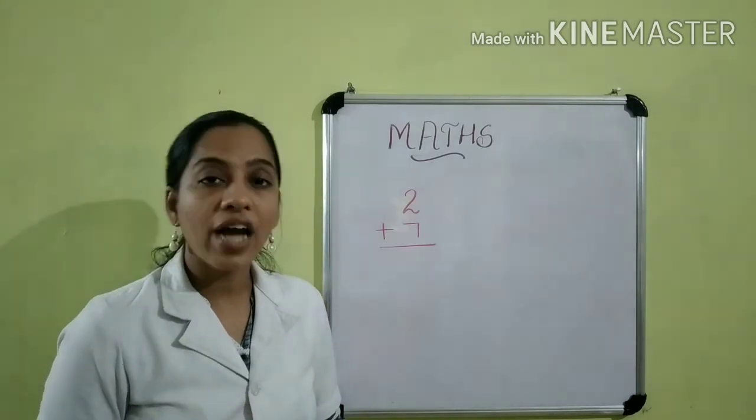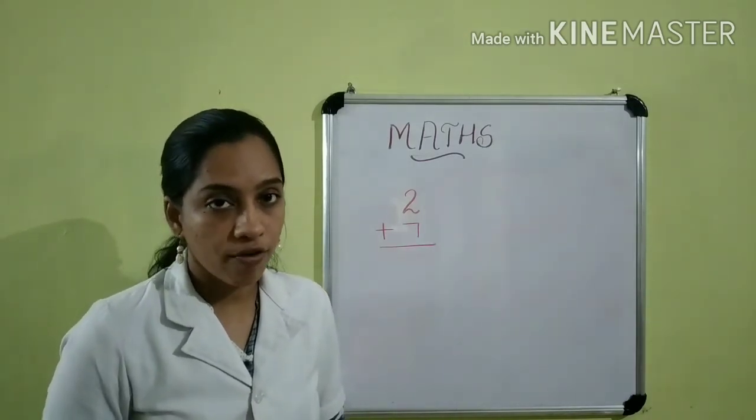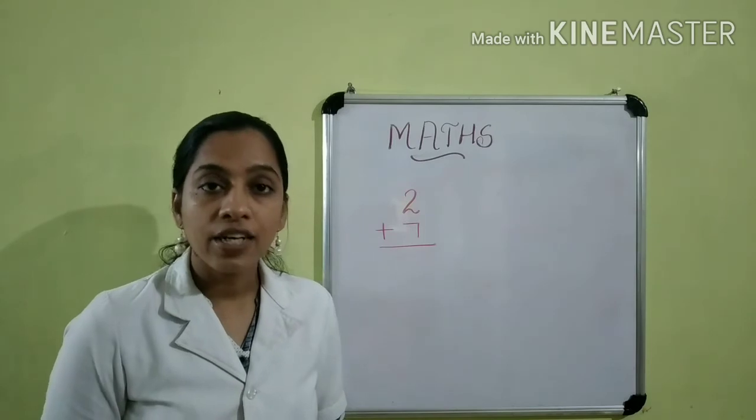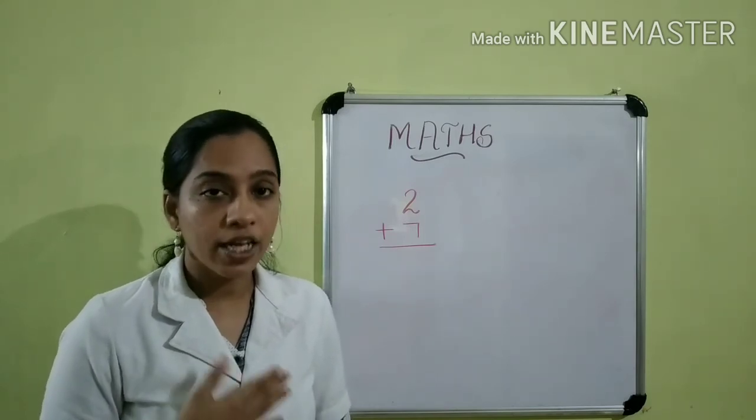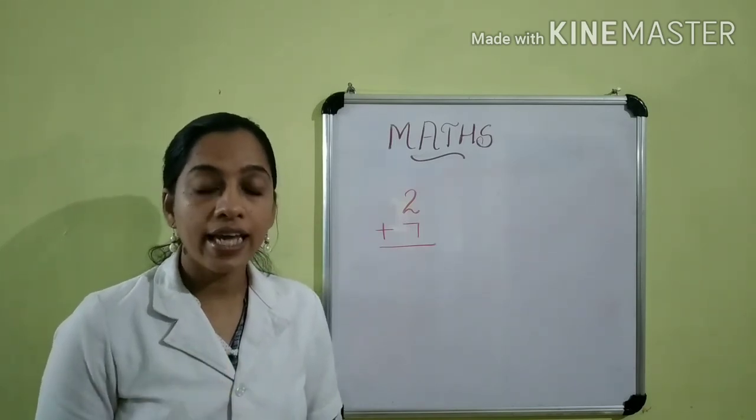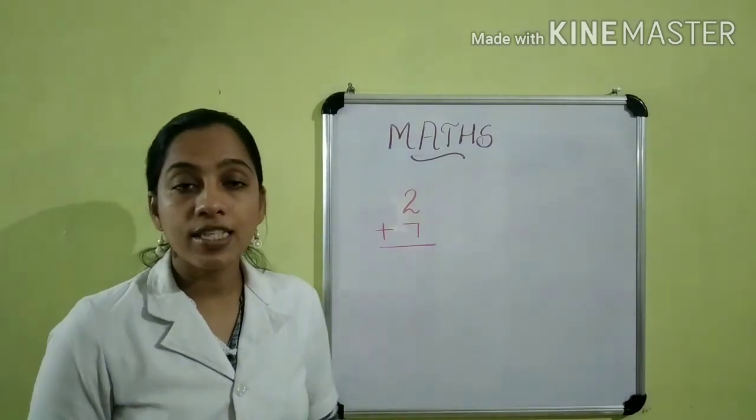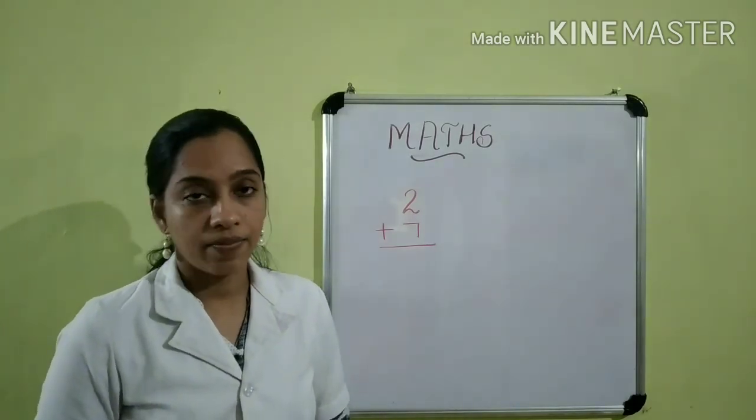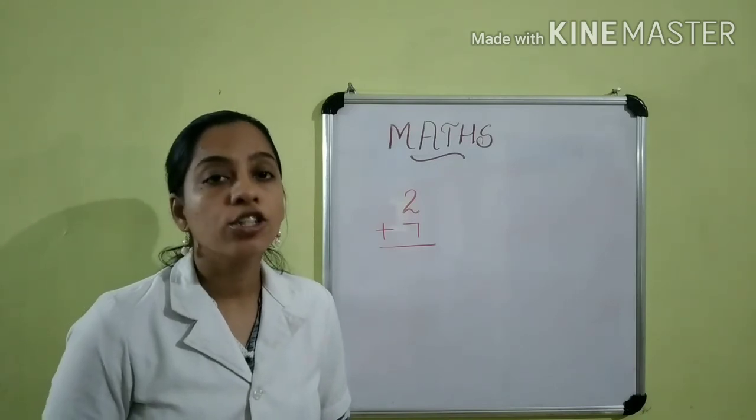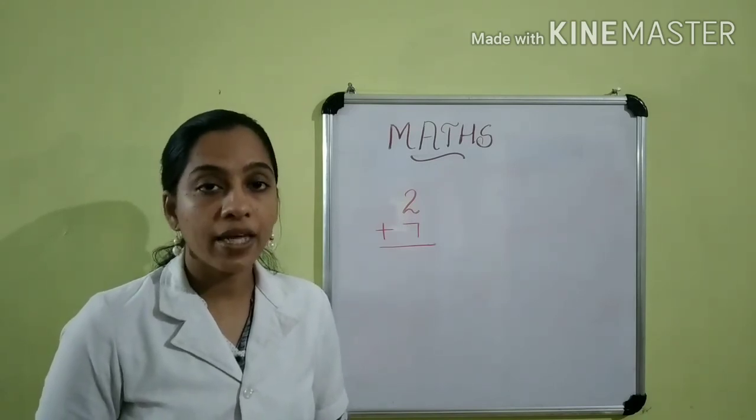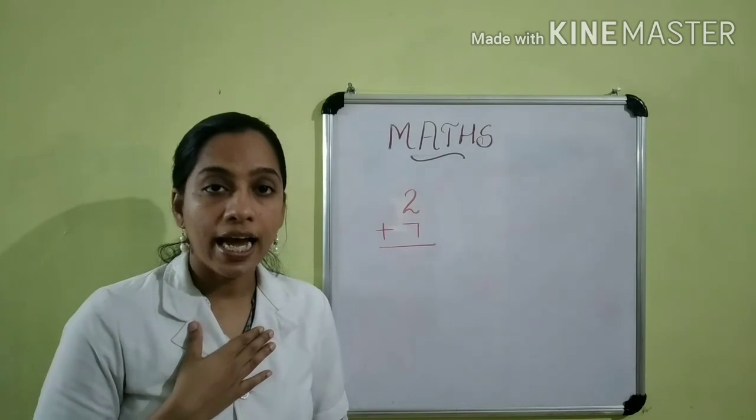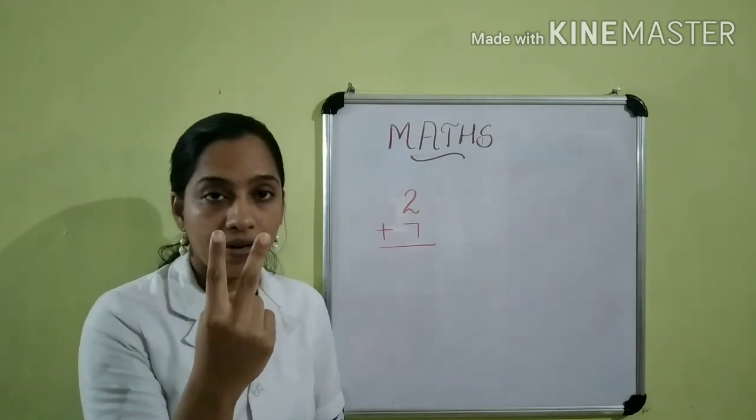Can you add the same numbers by counting forward method? We know how to add numbers by counting forward. For that, we will keep the bigger number in your mind and take the smaller number in your hand. Here, which is the bigger number? Seven. And which is the smaller number? Two.